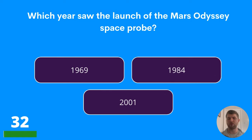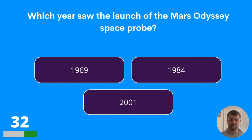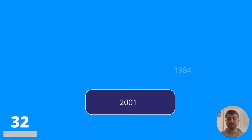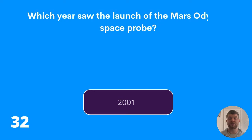Question thirty-two: which year saw the launch of the Mars Odyssey space probe? 1969, 1984, or 2001? The answer is 2001.